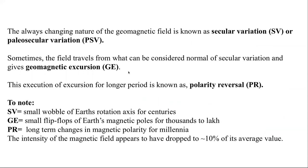The always-changing nature of the geomagnetic field is known as secular variation. Earth's magnetic rotation axis is offset by around 11.5 degrees, and when the geomagnetic field varies within the range of 0 to 11.5 degrees, this constant changing behavior is called secular variation. If this secular variation persists for a longer period of time, the term paleosecular variation is used.